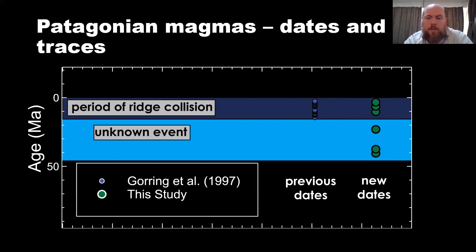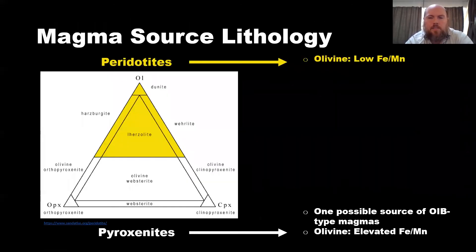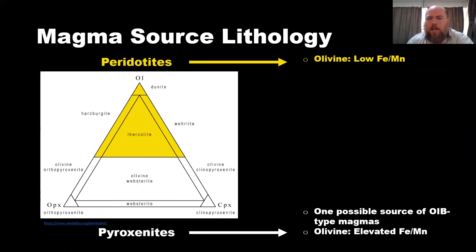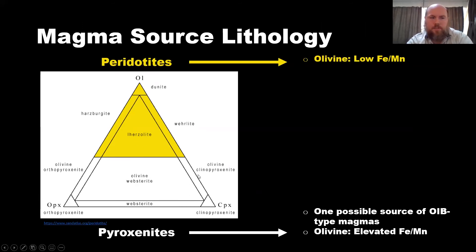One possible explanation we're working on has to do with the magma source lithology. Most petrologists assume that the mantle that melts is olivine-rich, or what would be considered a peridotite — shown as the yellow rocks on this ternary diagram. Normal peridotite melting produces melts, and the olivine that crystallizes from these melts will have a low, narrowly defined range of iron over manganese. However, it's recently been recognized that one possible source of OIB-type magmas is the melting of pyroxenites, the rock type shown at the bottom of this ternary diagram.